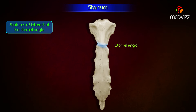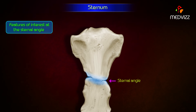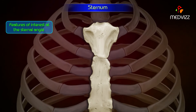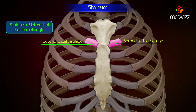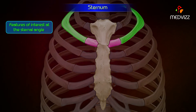Features of interest at the sternal angle include the following. The sternal angle can be felt as a transverse ridge on the sternum about 5 cm below the suprasternal notch and is an important surface landmark for many anatomical events. The second costal cartilage articulates on either side with the sternum at this level; hence this level is used for counting the ribs.